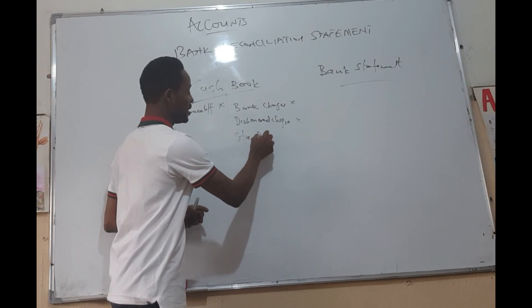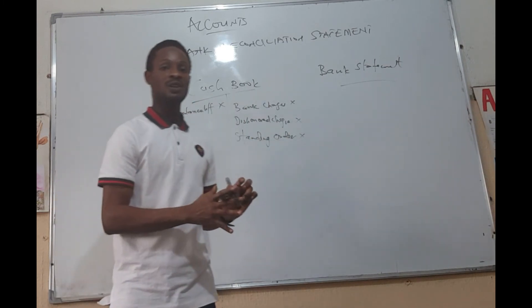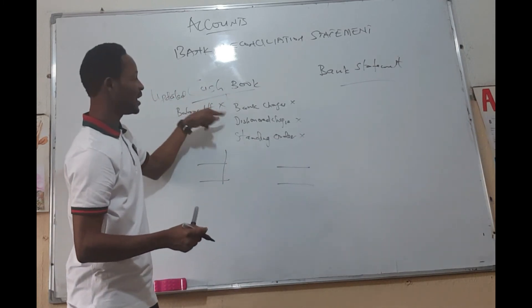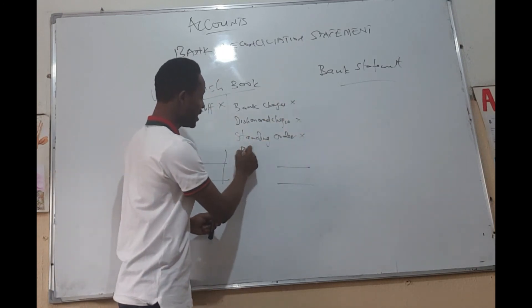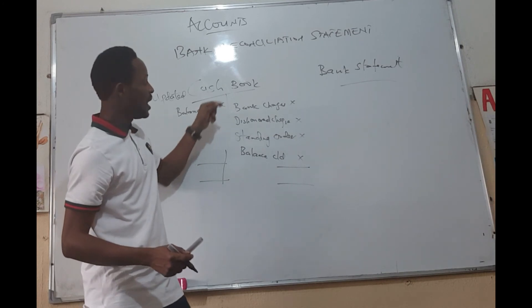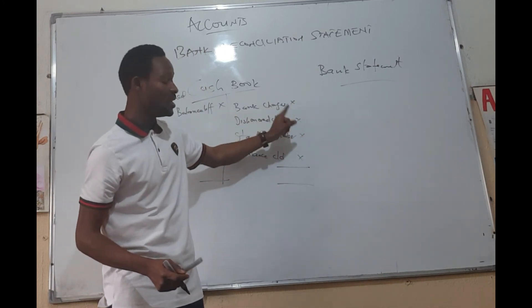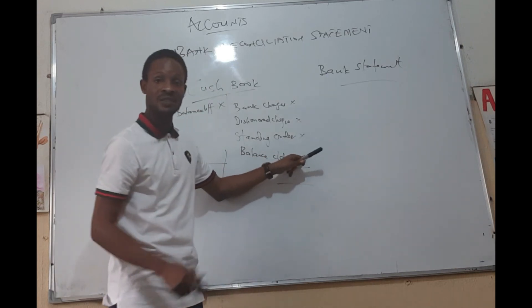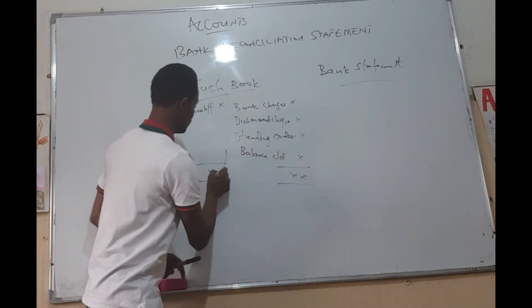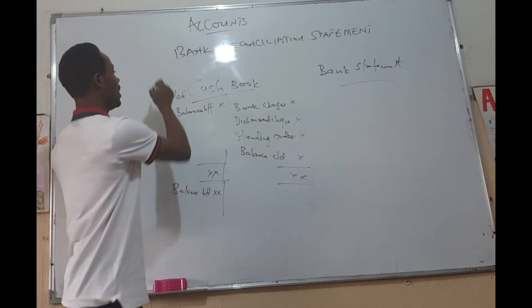Now, if these are all the differences we have, we close the accounts. The total of the debit side minus the total of the credit side gives us the balance carried forward. For example, assuming the debit side is $5,000 and the total of the credit items is $3,500 — $5,000 minus $3,500 equals $1,500 — your balance carried forward would be $1,500, which is the updated cash book balance. That completes step one.